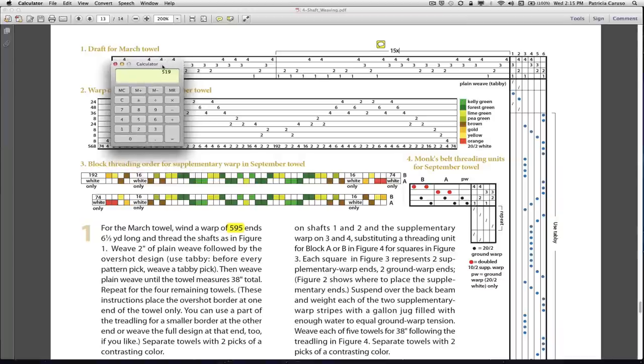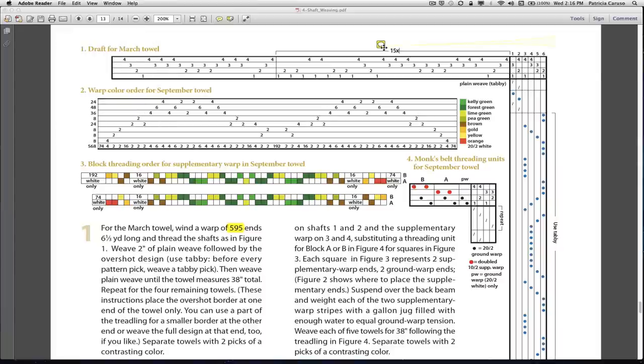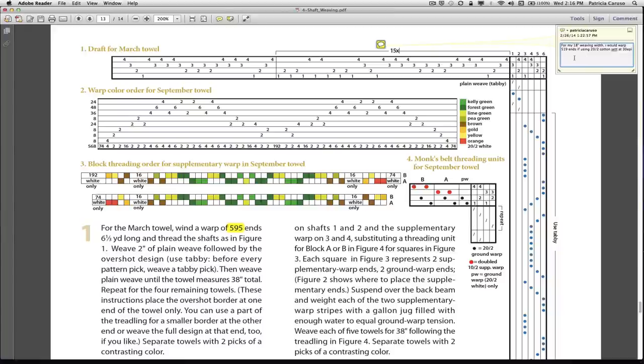So the total number of ends that I'm going to warp or I'm going to wind are 519. And I'll have to remember instead of repeating this repeat area here 15 times, I'm going to do it 13 times. And I've actually written that in a little note to myself right here. For my 19 inch weaving width, or I should say 18 inch, because that's what I'm going to end up with. I would warp 519 ends if using 22 cotton set at 30 ends per inch.